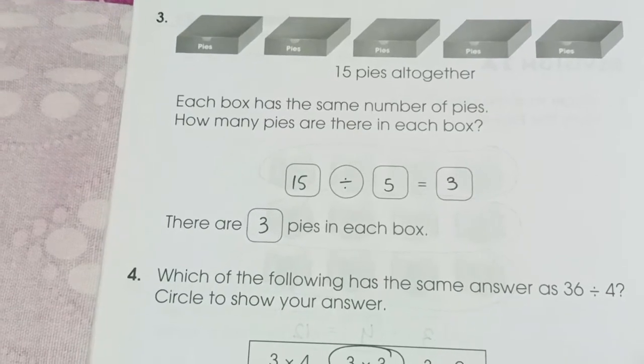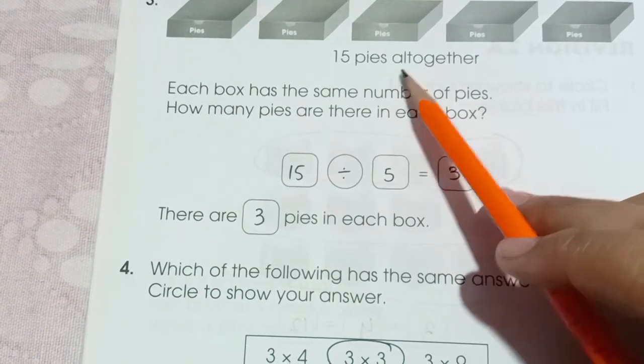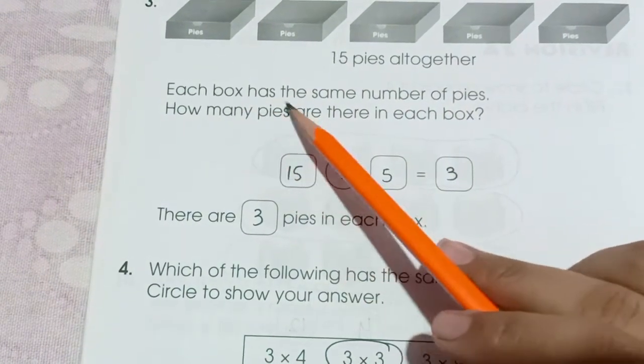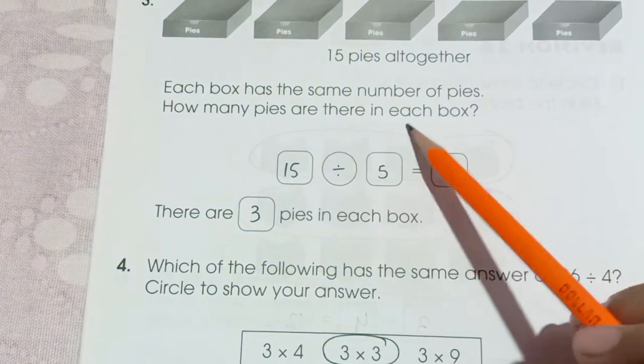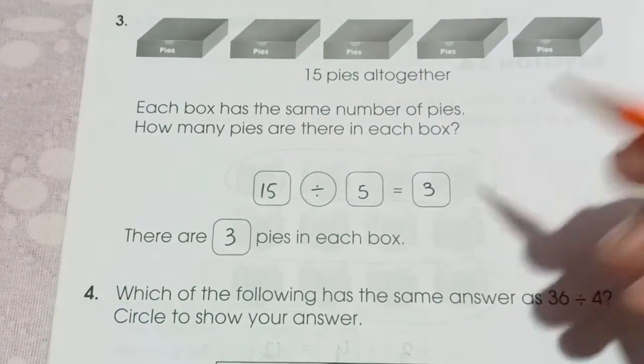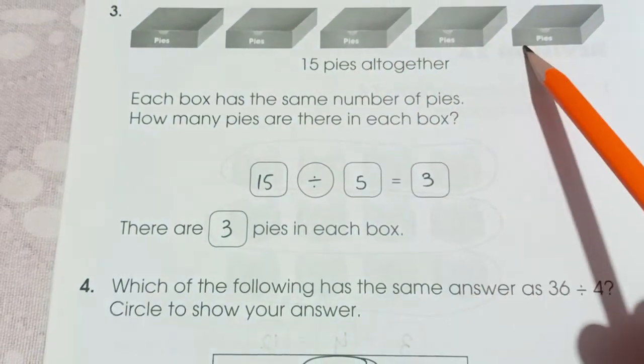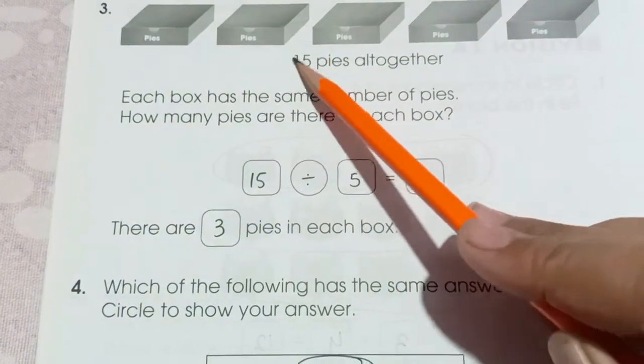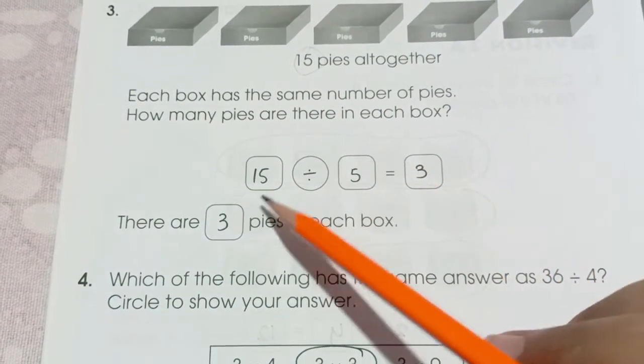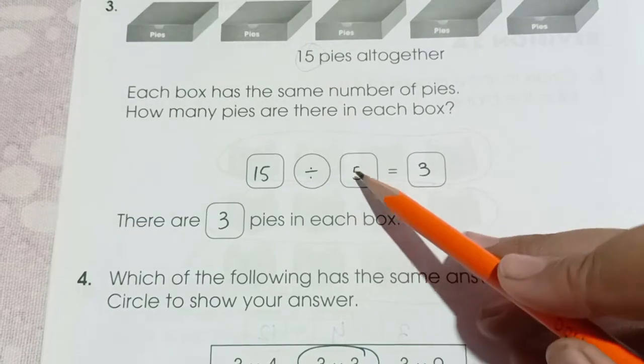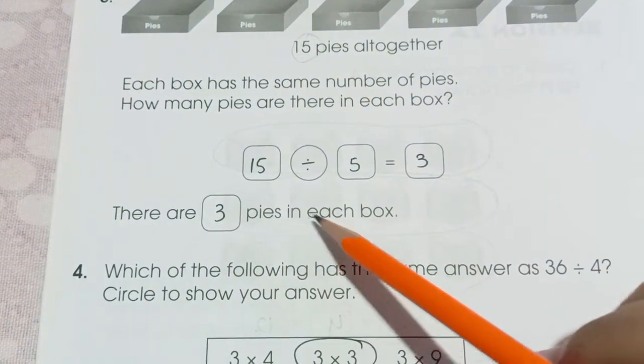Question number 3 is 15 pies altogether. Each box has the same number of pies. How many pies are there in each box? So we have total 1, 2, 3, 4, 5 boxes, and we have 15 pies. 15 divided by 5 is 3. 5 threes are 15, or 3 fives are 15. So there are 3 pies in each box.